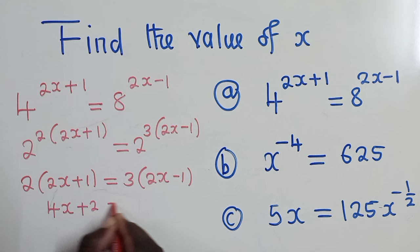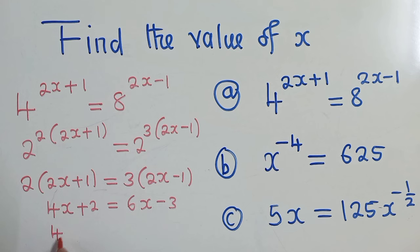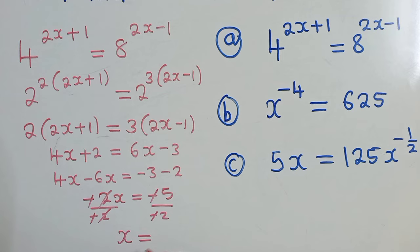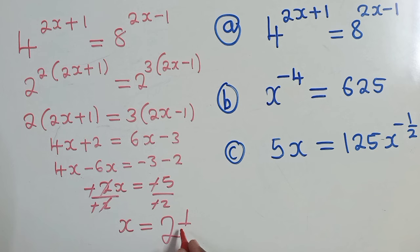We group the like terms. We shall have 4x minus 6x is equal to negative 3 minus 2 there. So when we work out things nicely, we shall get negative 2x is equal to negative 5. So divide by negative 2, this side we shall remain with x. The other side here, negative and negative will go, we shall remain with 2 remainder 1 over 2. So this is our solution.